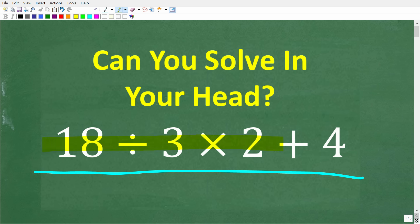We have 18 divided by 3 times 2 plus 4. Now if you think you can figure this out, go ahead and put your answer into the comment section. By the way, this is not a race, so if you want to pause the video and look at this, that's perfectly fine. So once again, we have 18 divided by 3 times 2 plus 4.